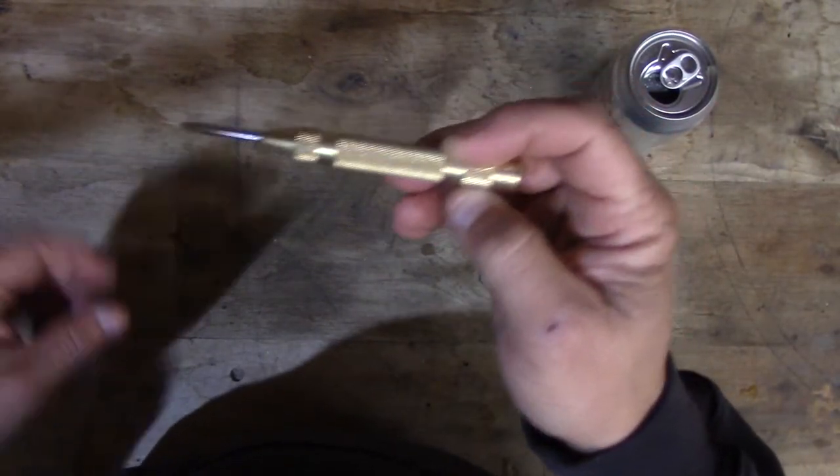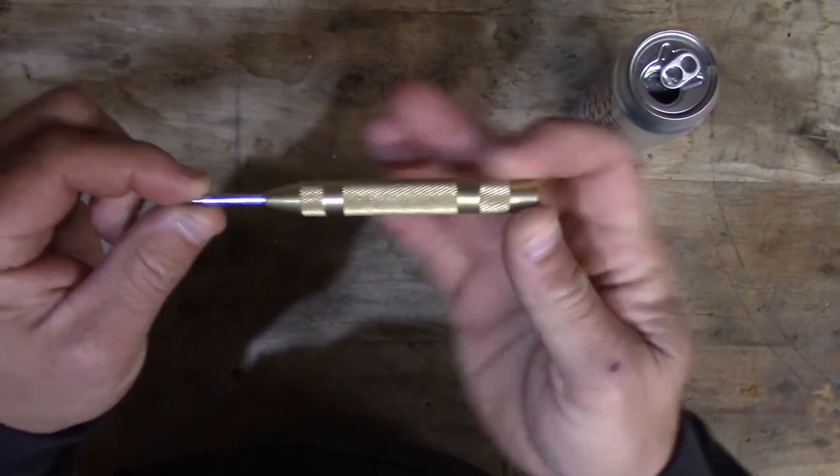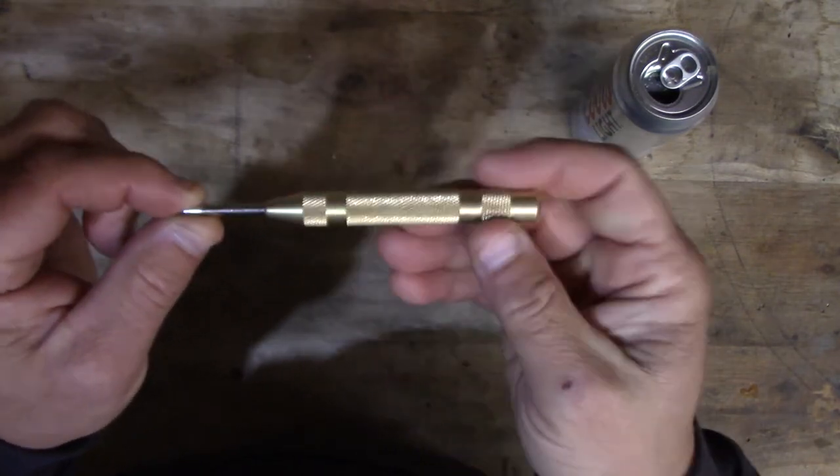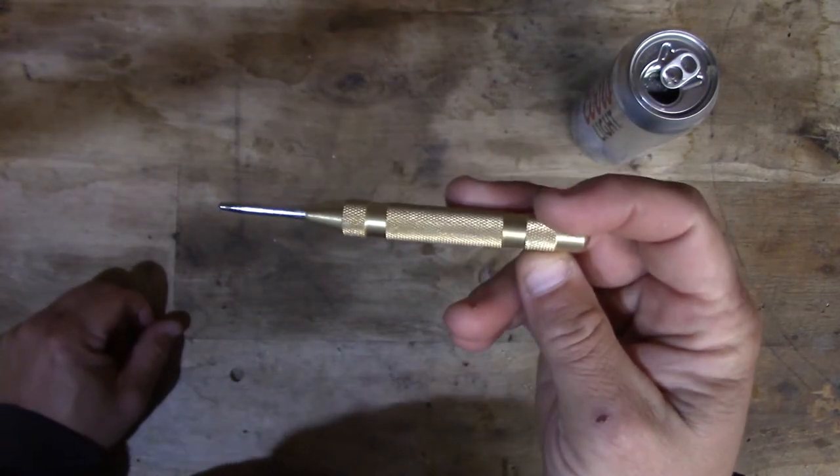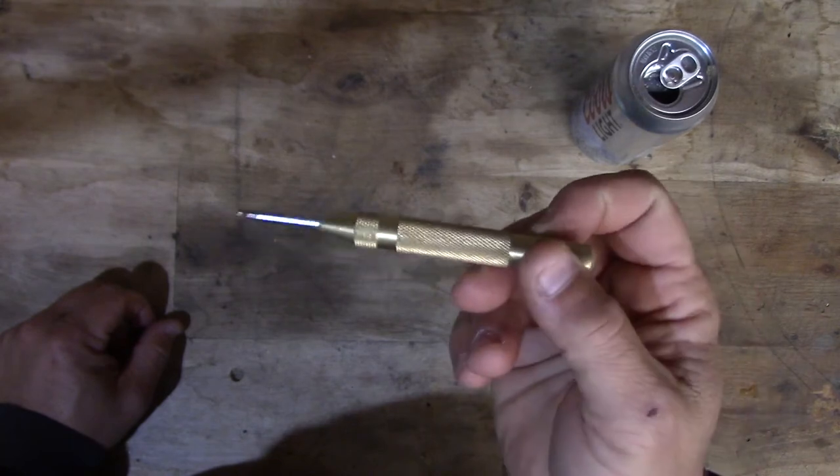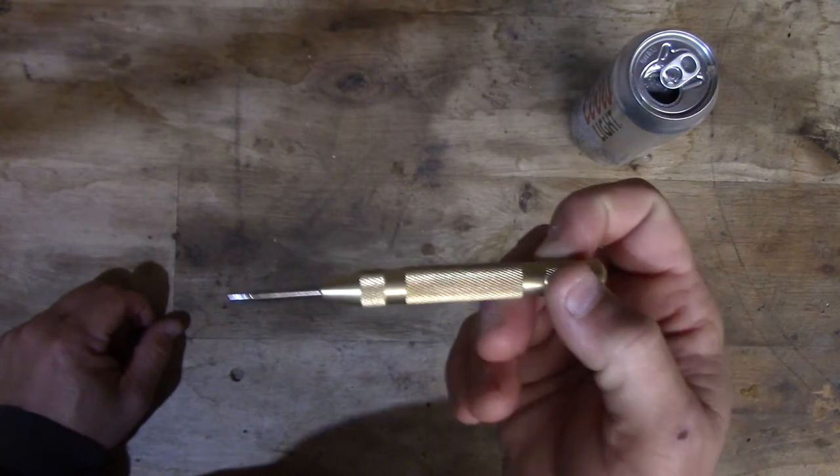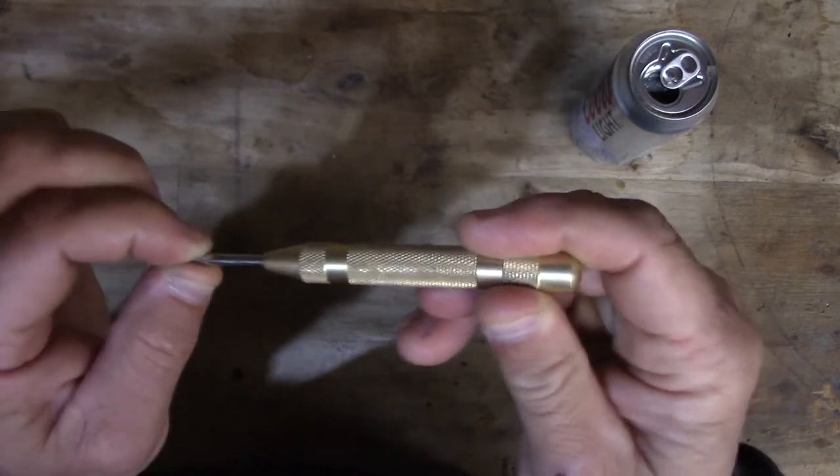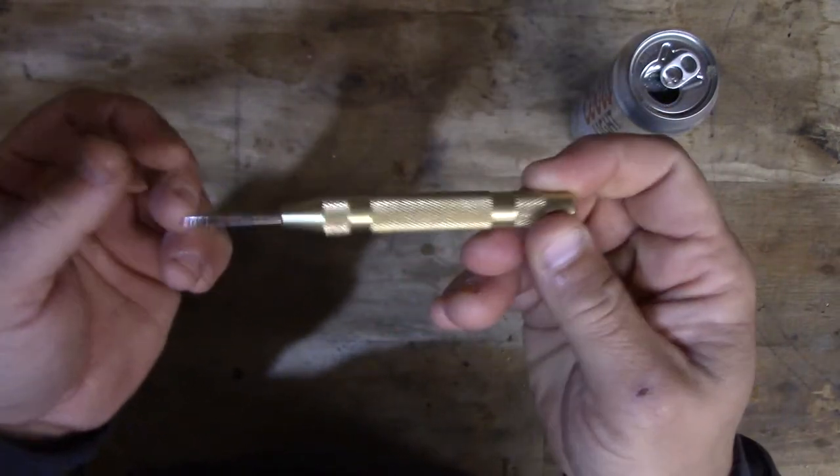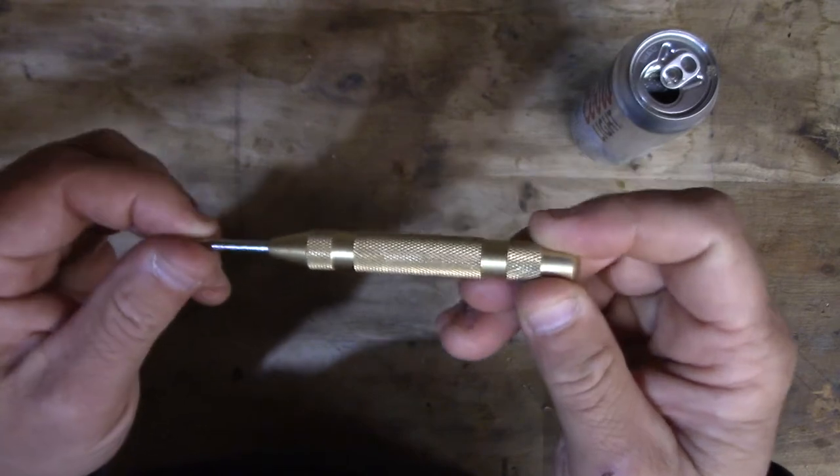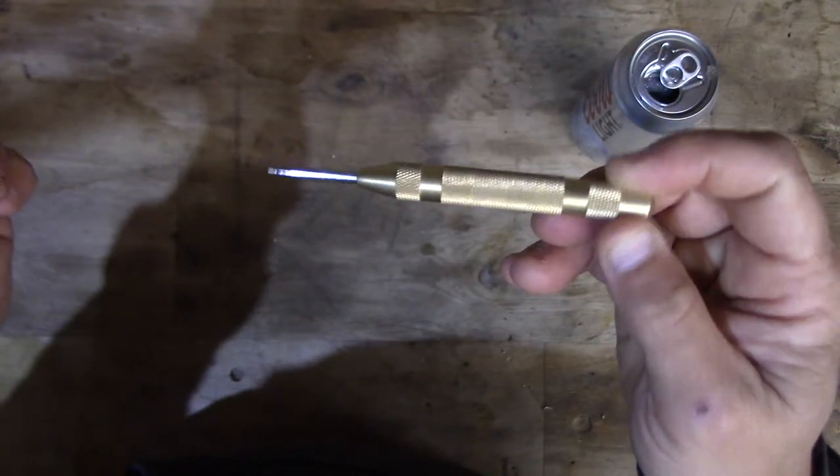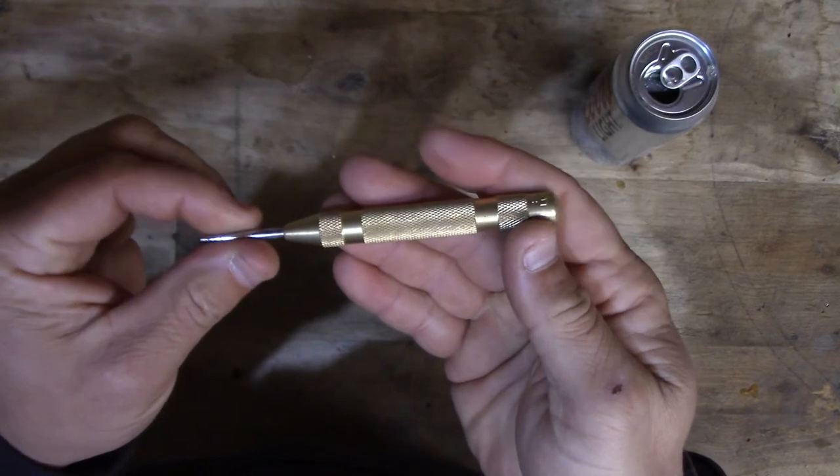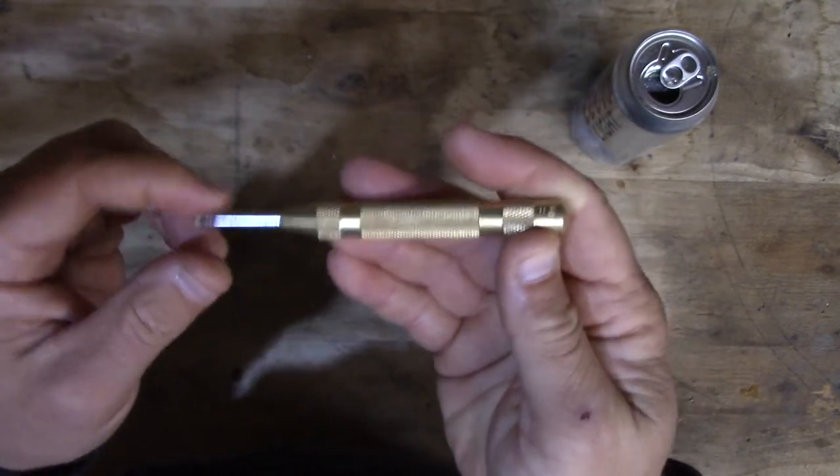Alright folks, we're doing another video. The other day I went to Harbor Freight and picked up one of these automatic center punches. Out of the package, this thing was a pretty unreliable piece of junk. I could get it to punch about every other time. Sometimes I'd get a couple in a row, sometimes I couldn't get it to punch at all. It was completely not worth the four bucks I spent on the thing.